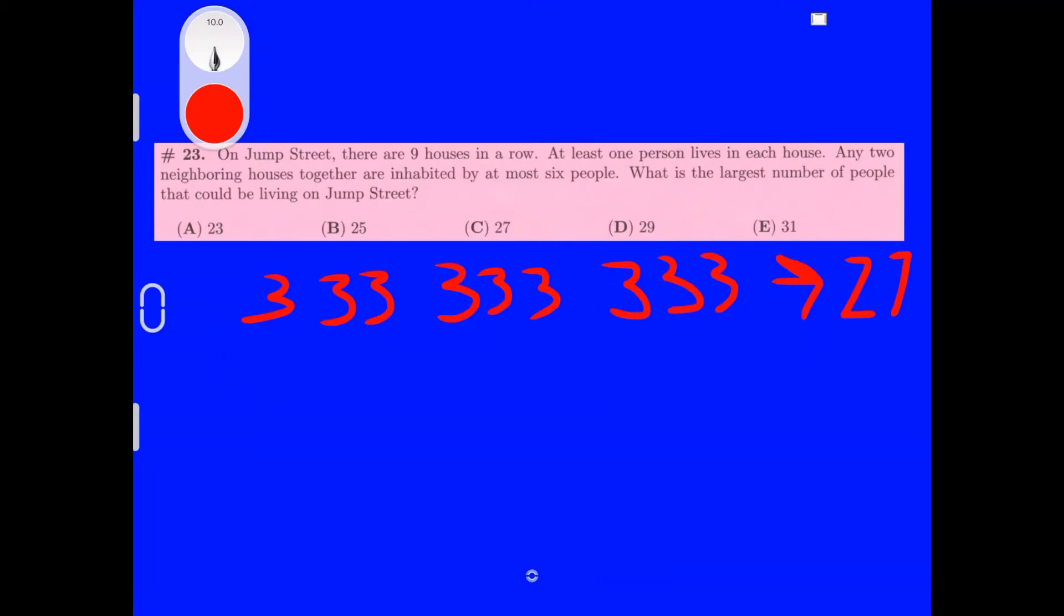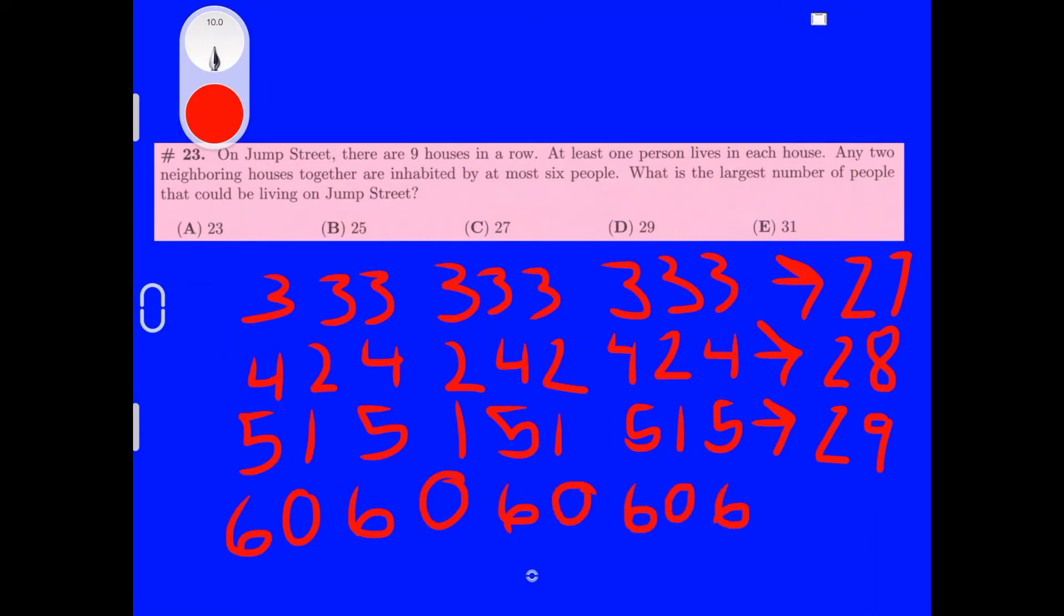We can try 4 and 2 alternating, and that would get you 28. We can go higher than that, but there isn't an option as 28. Let's go one more higher. This would be our final option, which is 5 and 1, and this would get 29. We can't do 6 and 0 because that would get a lower number. If we tried 6 and 0, there would be 0 plus 0 plus 0, and there's 5 sixes, and we would get 30. It is greater than 29, but 30 is not an option. Our greatest option is 29, so our answer is D.